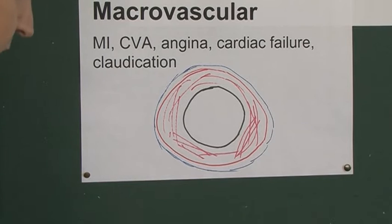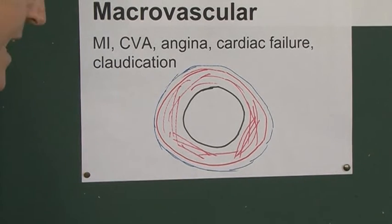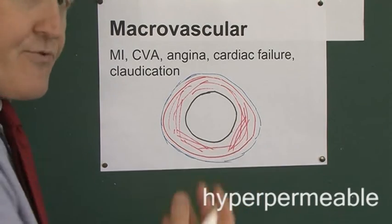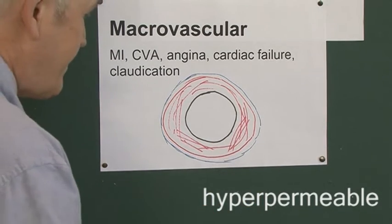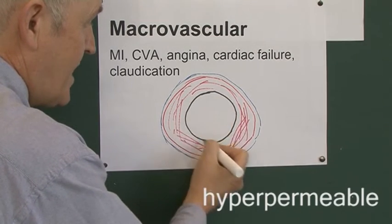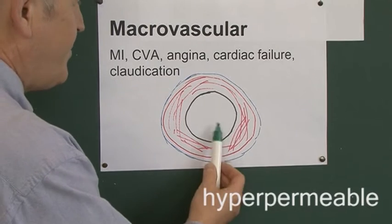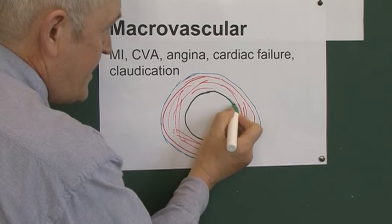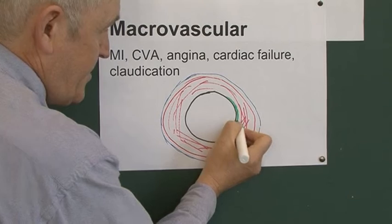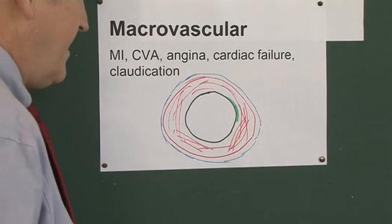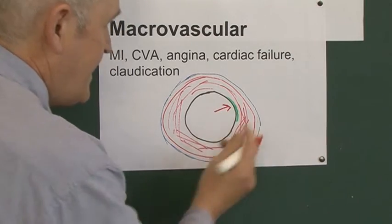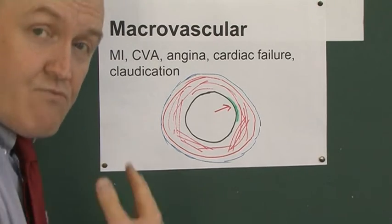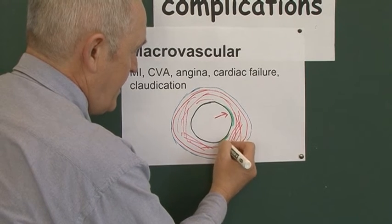The key thing is that we have a patent lumen through which blood can travel, and the tissues distal to that area of the artery are well perfused. Now, for reasons that aren't particularly well understood, in diabetes the vascular endothelium — this inside layer — becomes hyperpermeable. Fatty material can get through it which normally can't, accumulating underneath the intima. If blood pressure is high, that forces fatty and cholesterol-based material through the already more permeable vascular endothelium.